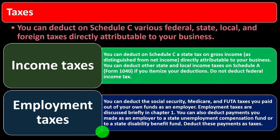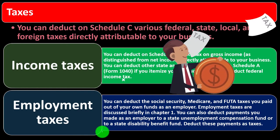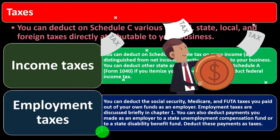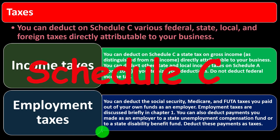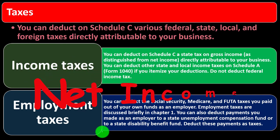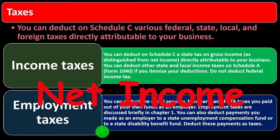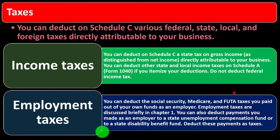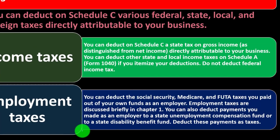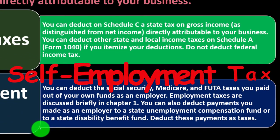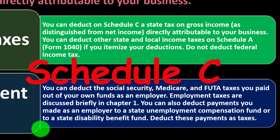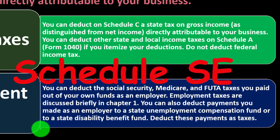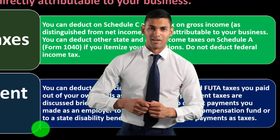It's a bit confusing because payroll taxes — which include Social Security and Medicare — and self-employment taxes — which also include Social Security and Medicare — are two different things. If you're a Schedule C business with no employees, your net income is subject to self-employment tax, calculated on Schedule SE. You can deduct half of it, as discussed in prior presentations.